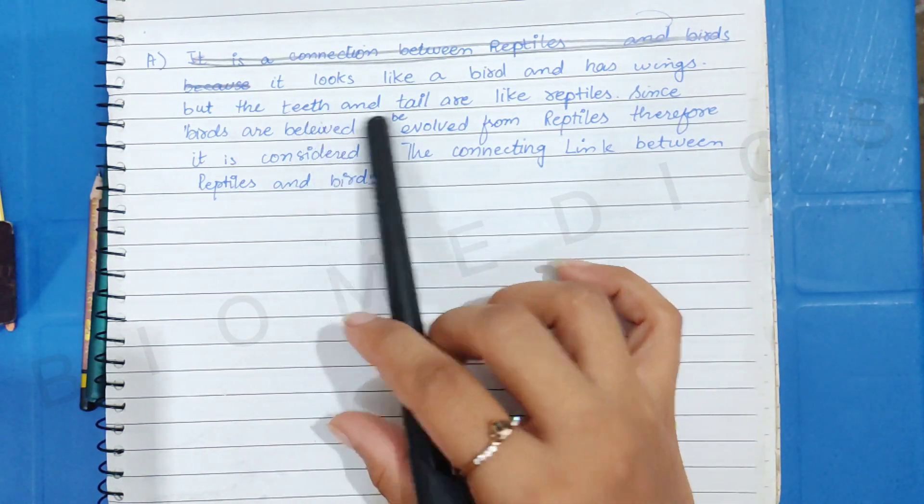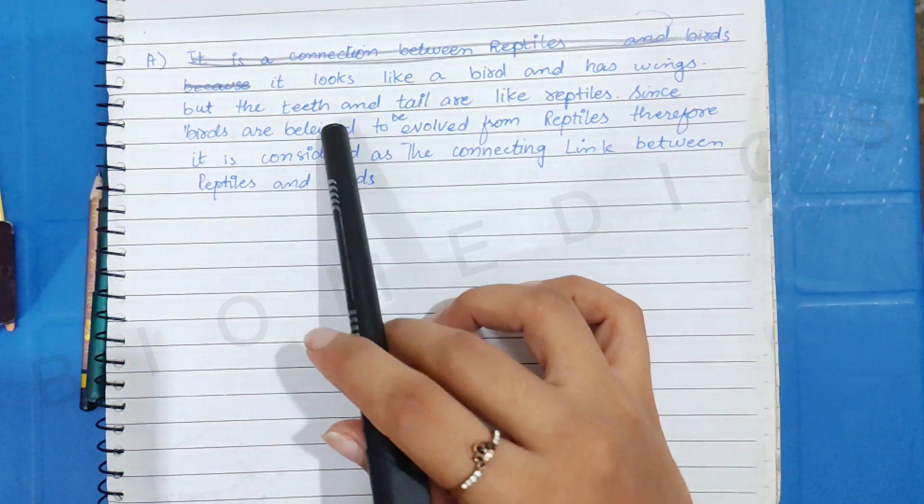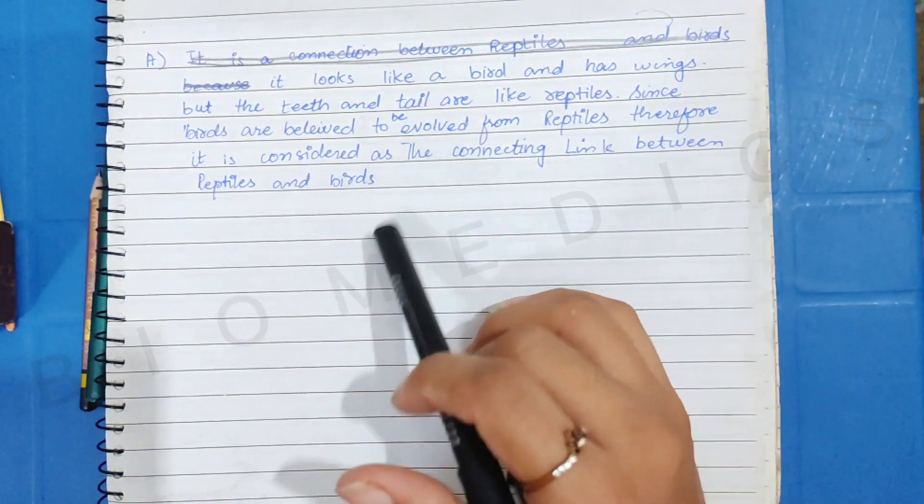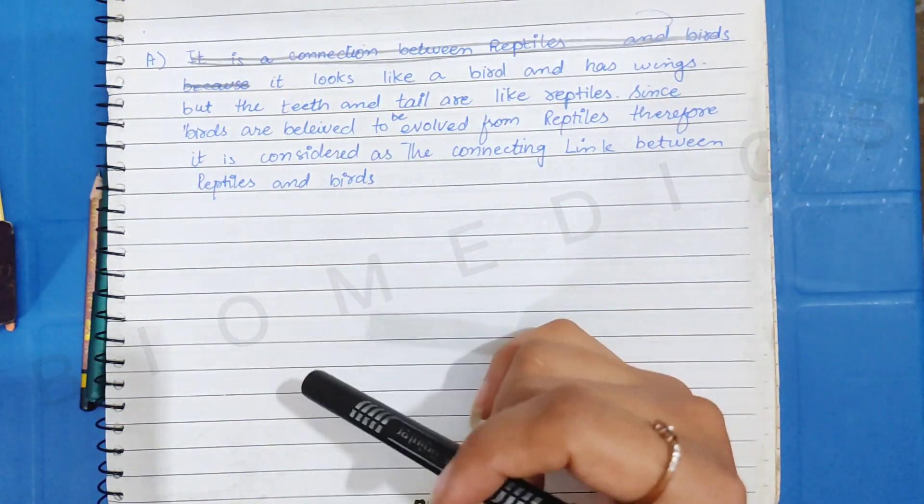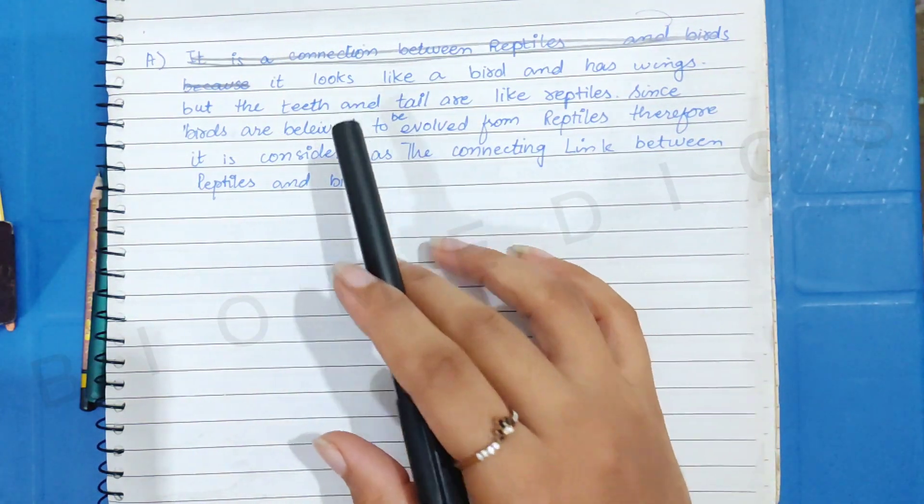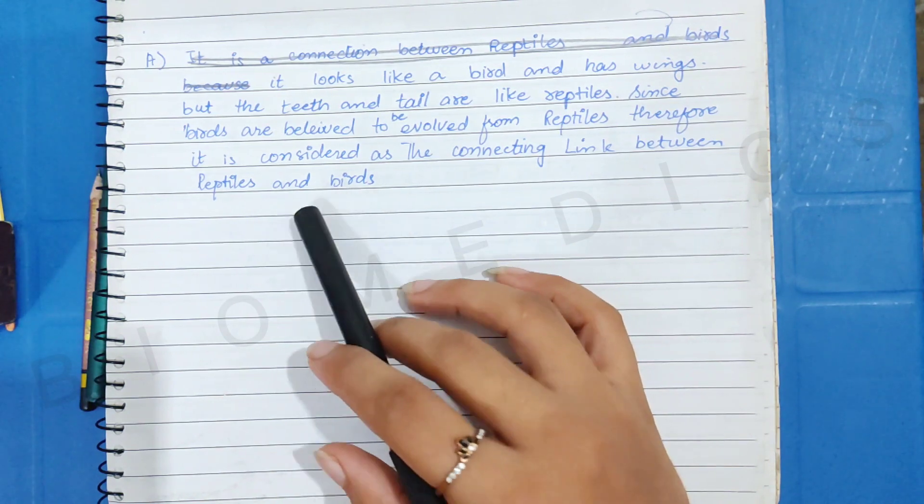But it is also like a reptile. Now, you know that the birds are evolved from reptiles. So the reptiles have evolved and they have modifications. Then it is birds. So this is why it is considered. Because it takes two characters. And we say that it is a connection between reptiles and birds.